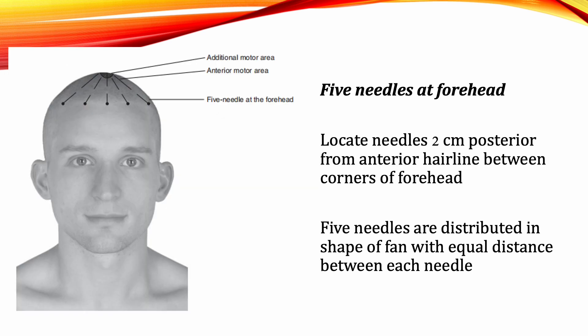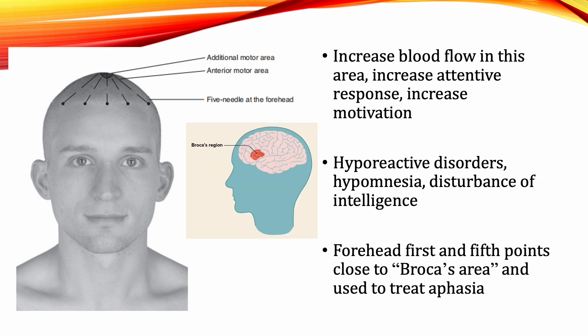Five Needles at the Forehead: Locate the needles 2 cm posterior from the anterior hairline between the corners of the forehead. Five needles are distributed in the shape of a fan with equal distance between each needle. They function to increase blood flow in this area, increase attentive response, and increase motivation.